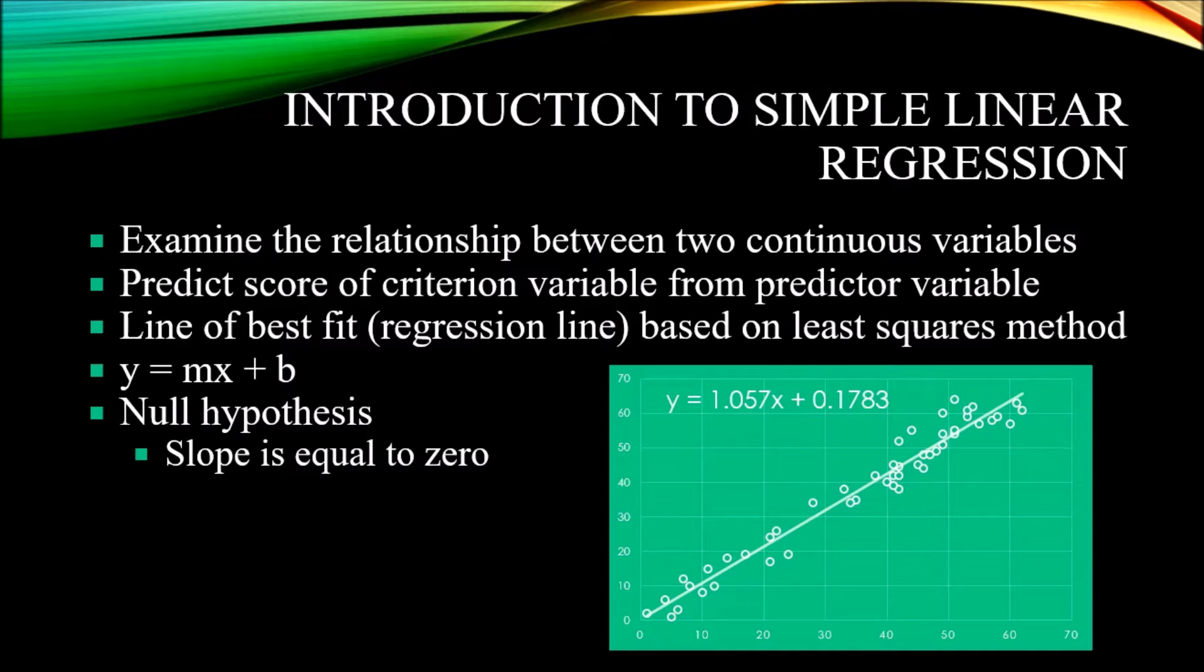With a simple linear regression, we examine the relationship between two continuous variables. And the word simple, in this case for linear regression, means that we just have one predictor variable.